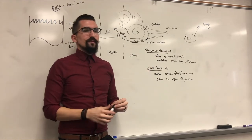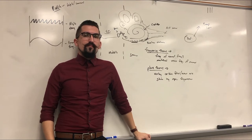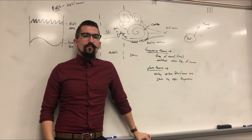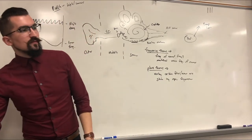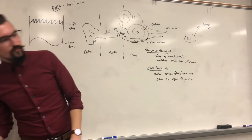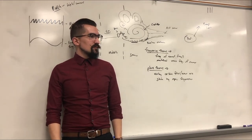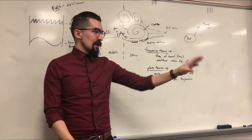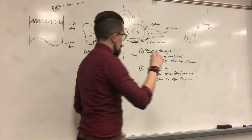Both theories have merit, and they can both be true or partially true. Frequency theory means the neurons fire at the same rate as the incoming wave — like if you knock three times, the neurons fire at that same pace. Place theory means only the hairs in the high-frequency zone activate for high sounds, and only low-frequency zone hairs activate for low sounds, and the location tells the brain what it is.